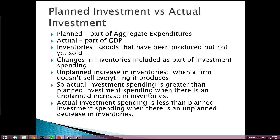Inventories are goods that have been produced but not sold, and inventories are included as part of investment spending. A business may plan to produce a certain amount of a good, and so they'll plan on having a certain amount in inventory at any given time. But if they don't sell as much as they had planned on, their inventories start to go up — their warehouses start to fill up. This is an unplanned increase in inventories.